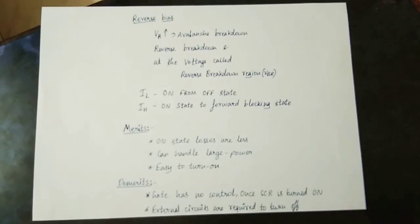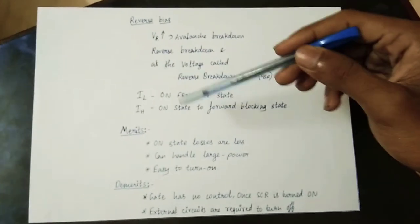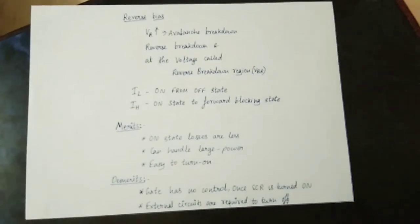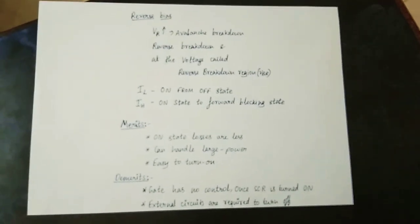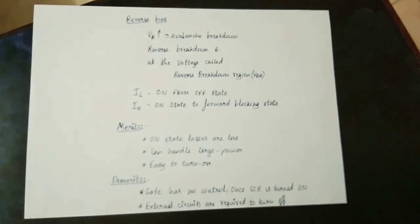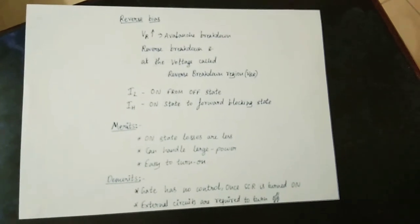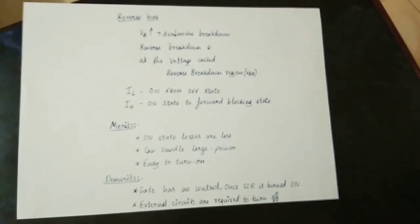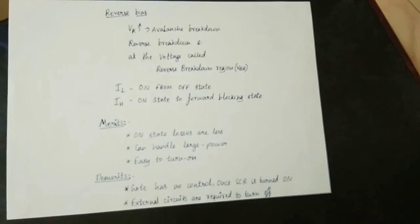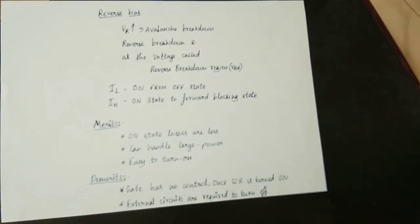Now, regarding latching current and holding current: latching current is the minimum current to turn the SCR from off state to on state. Holding current is the minimum current to keep it from on state back to forward blocking state. If you go from on state to forward blocking state, that is the holding current.